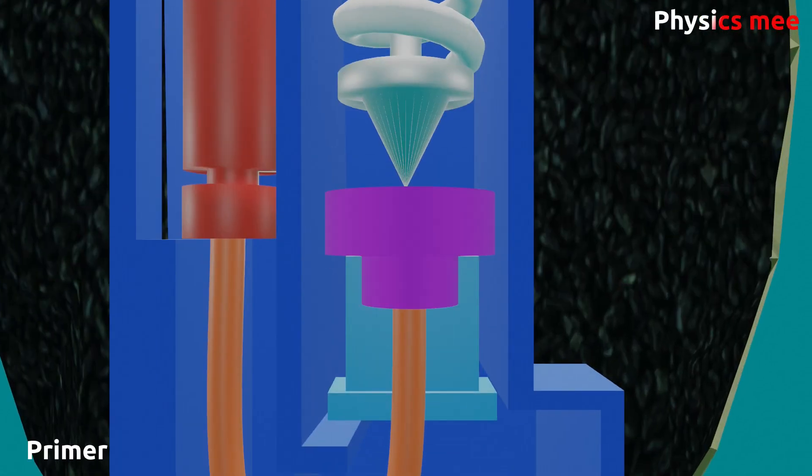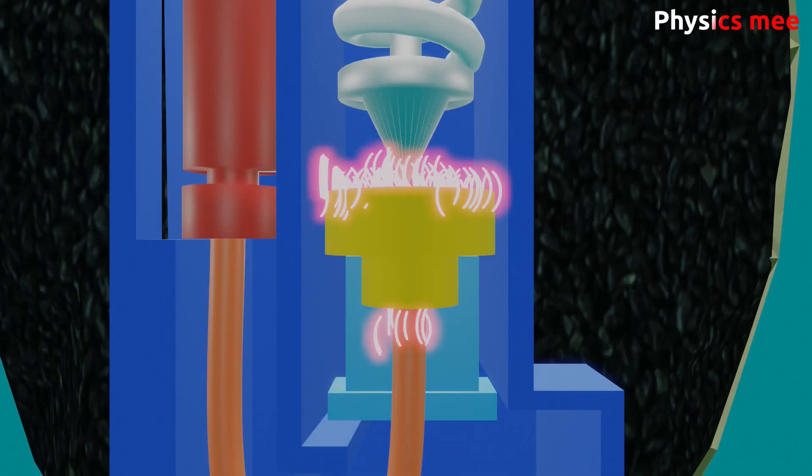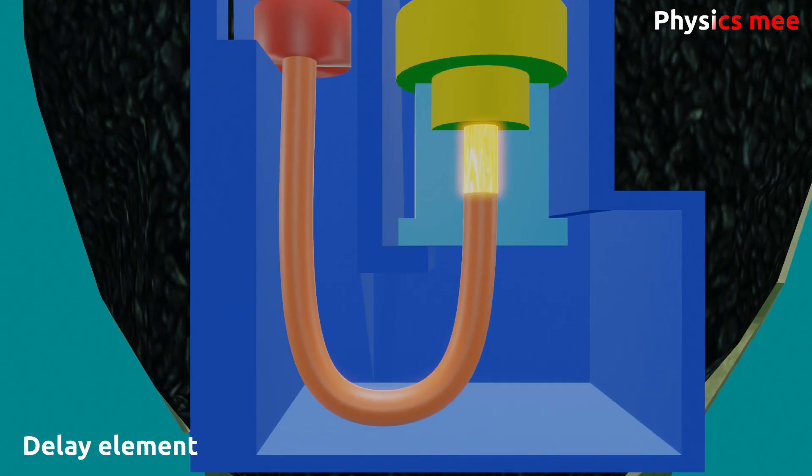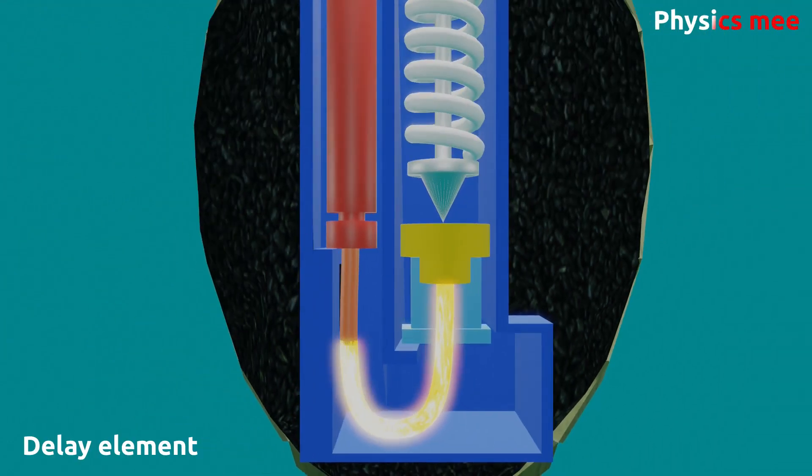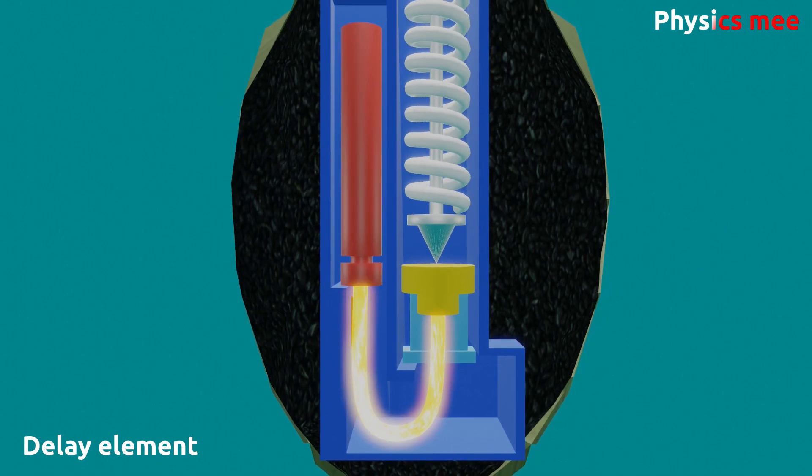Now the primer will generate a spark which in result ignites the delay element connected to it. Generally, it takes around 4 seconds for the delay element to completely burn down.